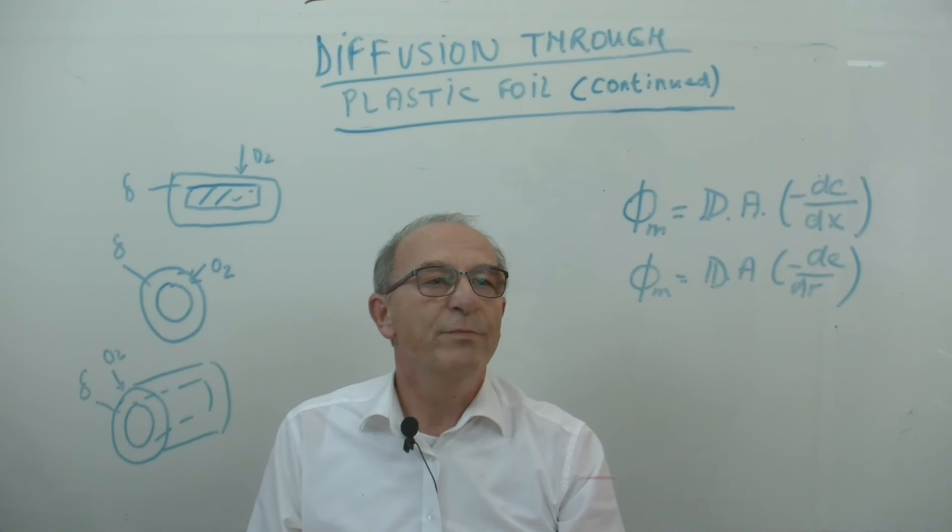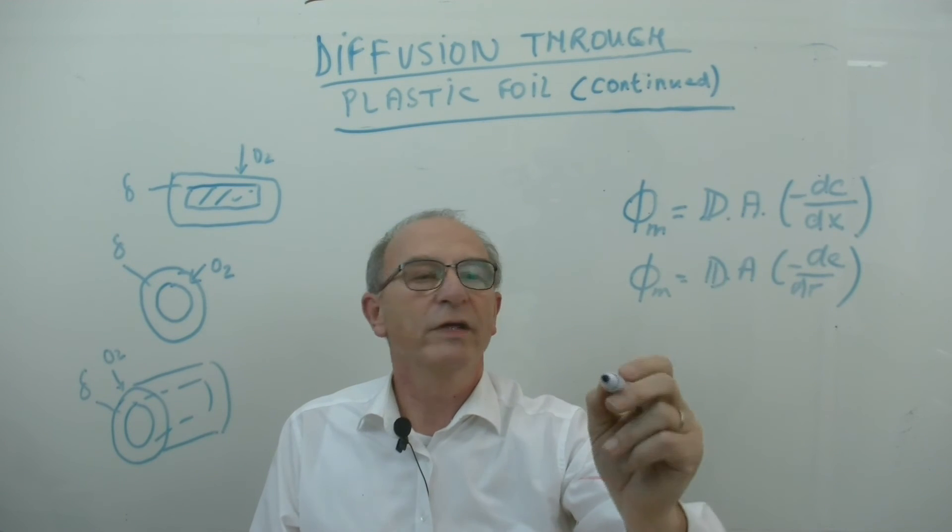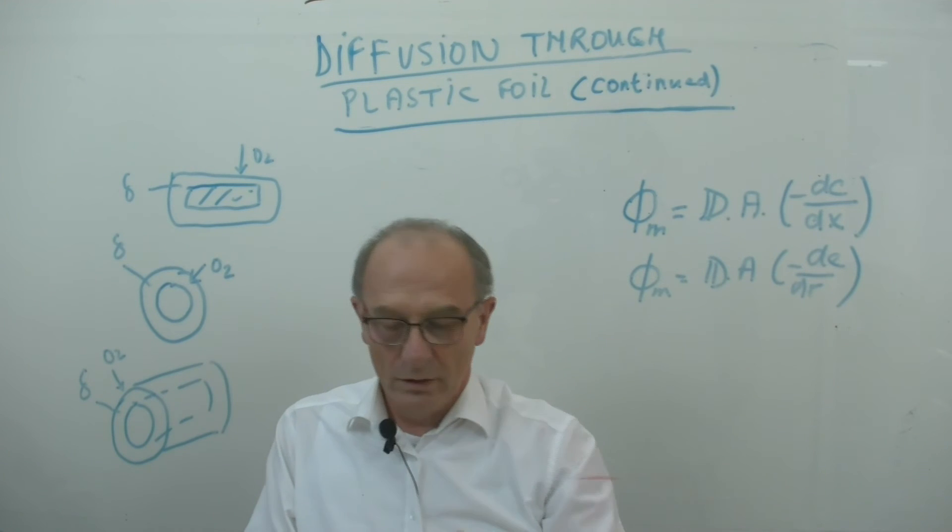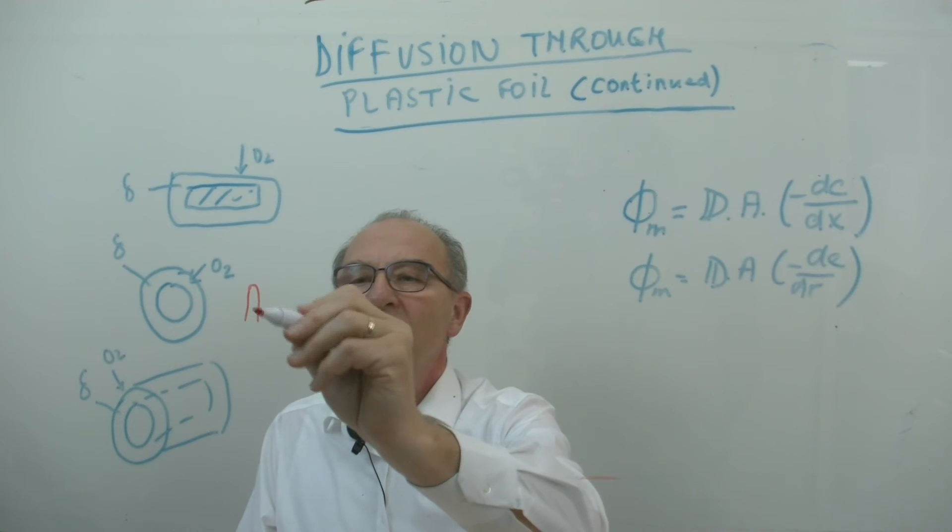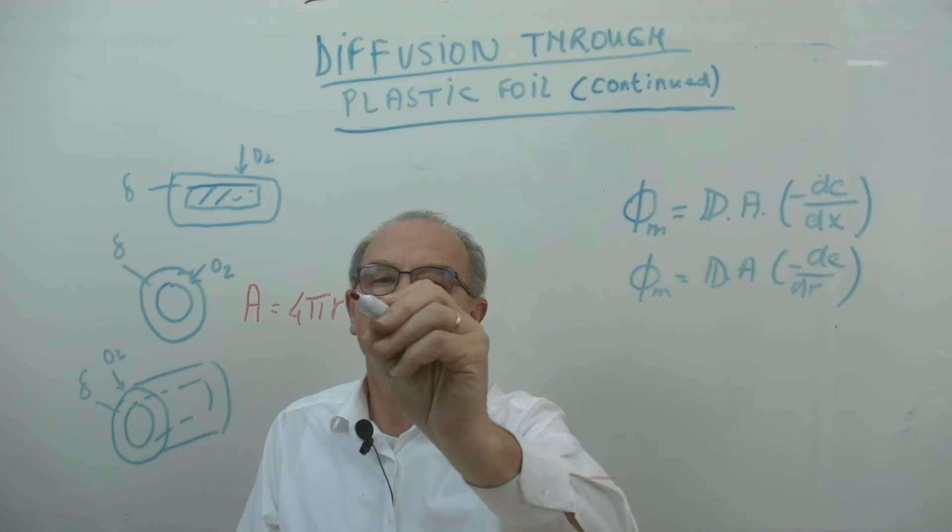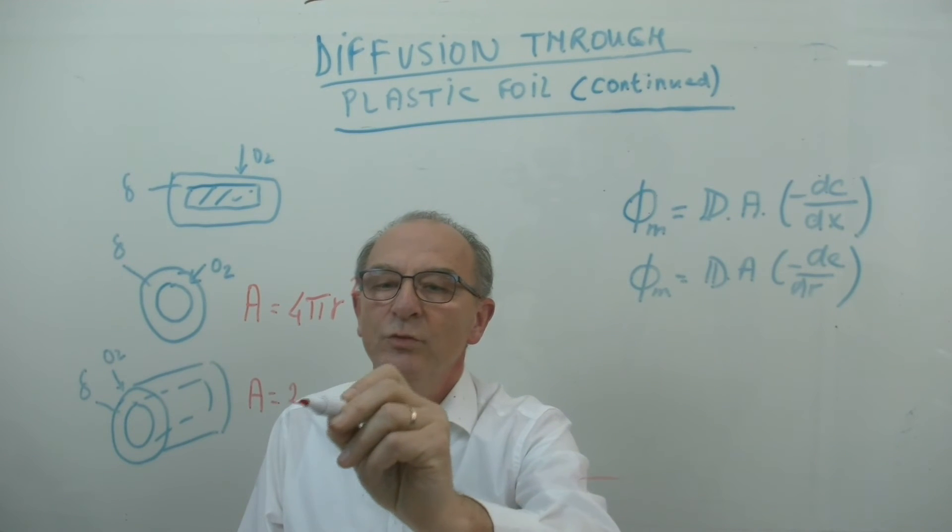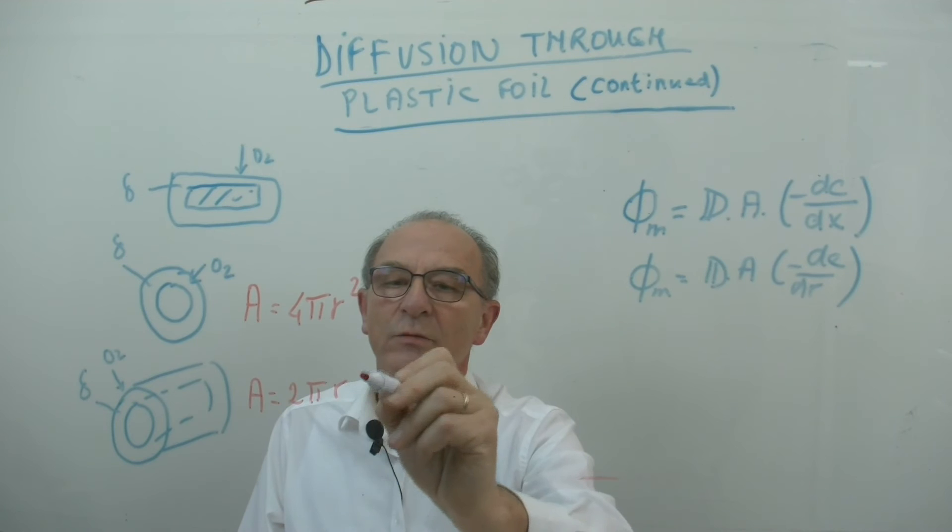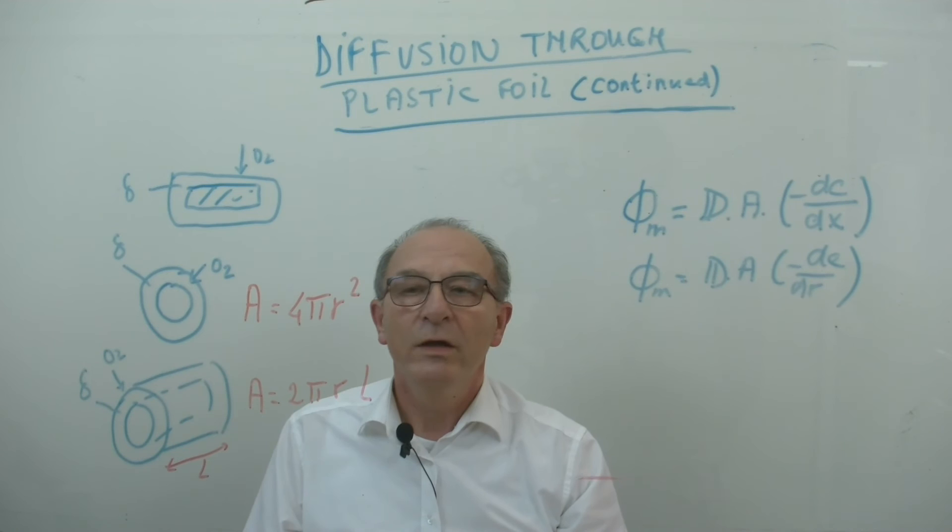In this case, the important thing is that you substitute different areas. So for a sphere, perhaps I can do it in red, that's perhaps better. In a sphere, the surface area is 4π multiplied by R squared. For a cylinder, this becomes 2π multiplied by R multiplied by the length of this cylinder.